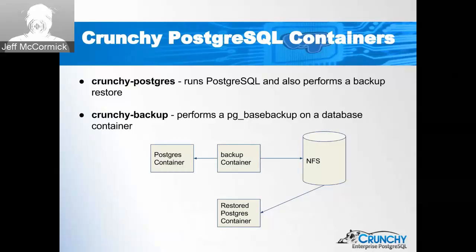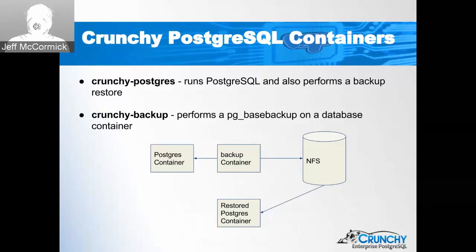Restore is performed by that same Crunchy Postgres container. By passing in a backup path and some environment variable flags, you tell it to do a restore from a particular timestamp-directory backup path. It reads the archive files off NFS and pulls them into the running Postgres container using rsync — basically doing an rsync from that NFS path back into the container.